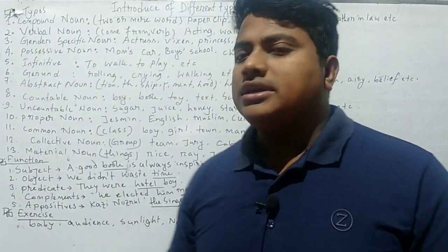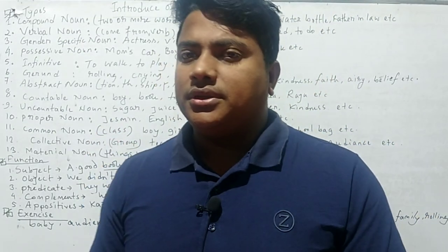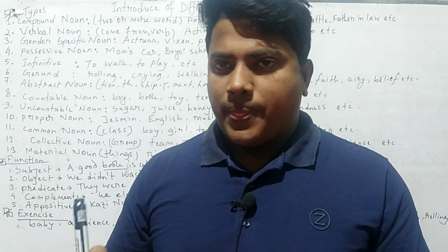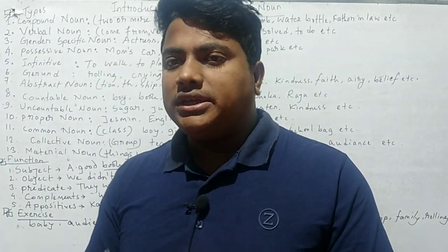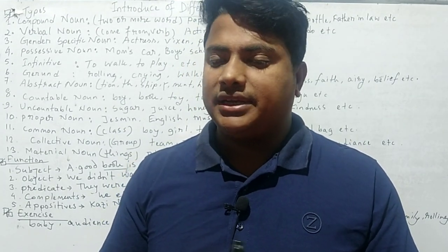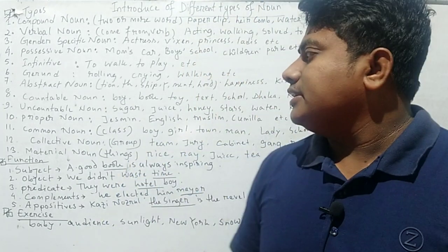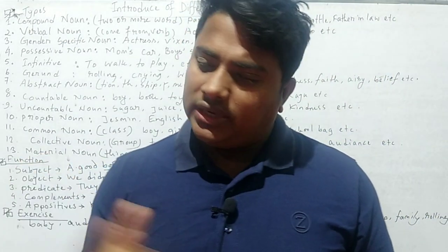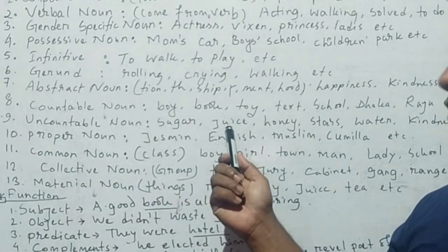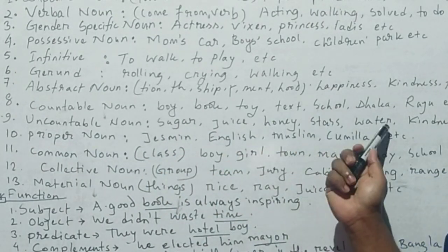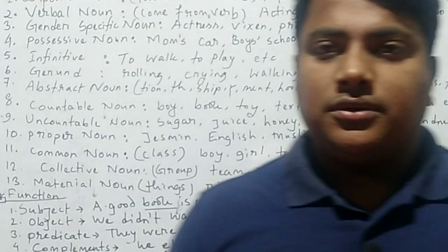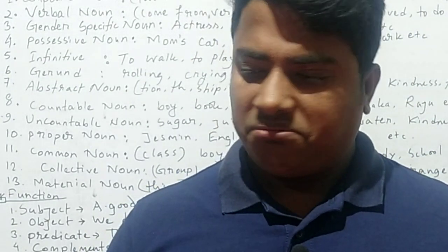Some other nouns are uncountable nouns. These express a quality or quantity that cannot be calculated or separated. They often express liquidity, for example: sugar, juice, honey, water, kindness, etc.